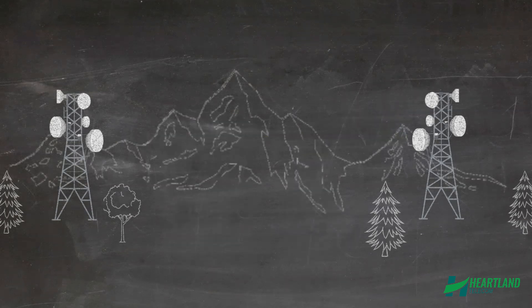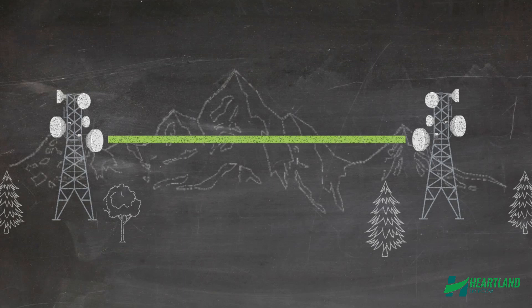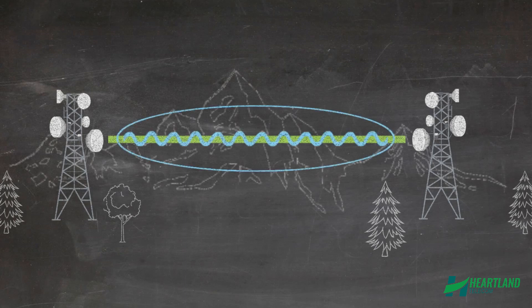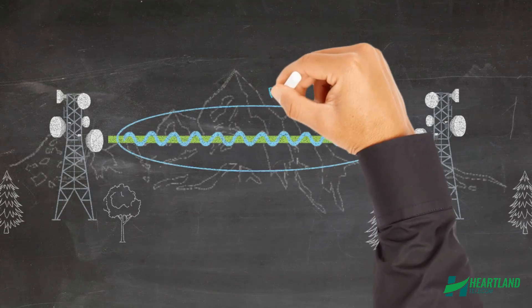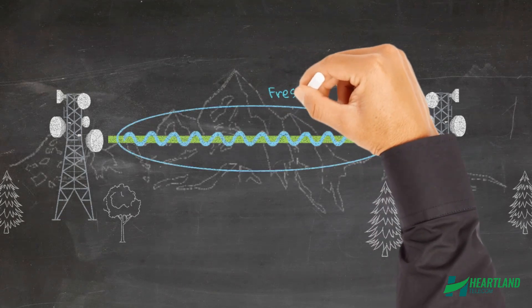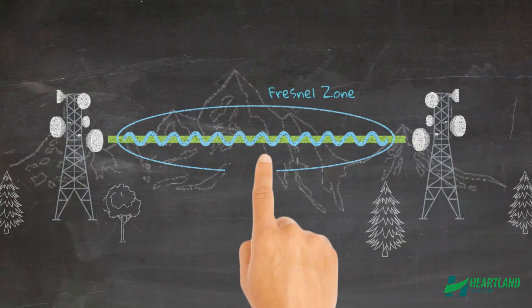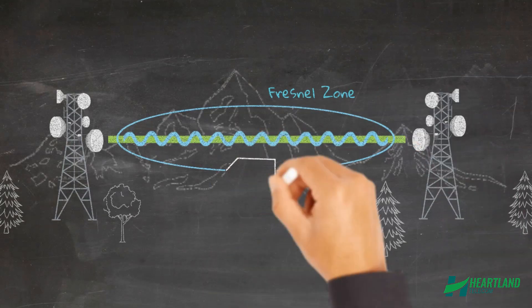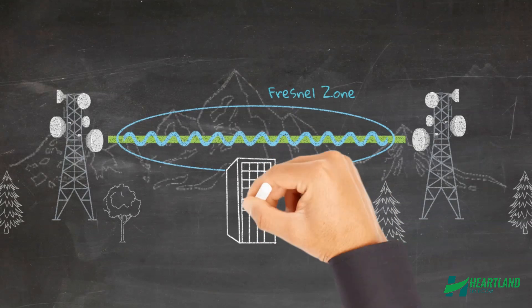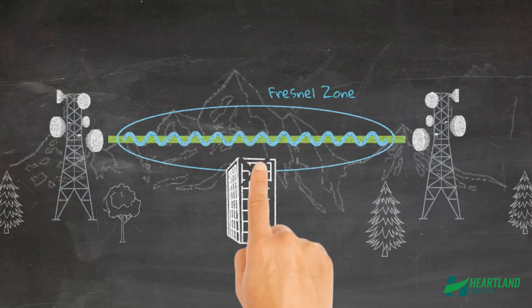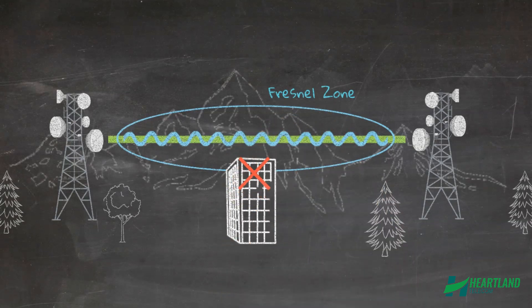Even if a clear link seems obvious, the line-of-sight may be affected by an object within the Fresnel Zone. The Fresnel Zone is an elliptical area surrounding the link path. For example, if an object such as a building or a tree is too close to the signal path, it can reduce the strength of the signal.